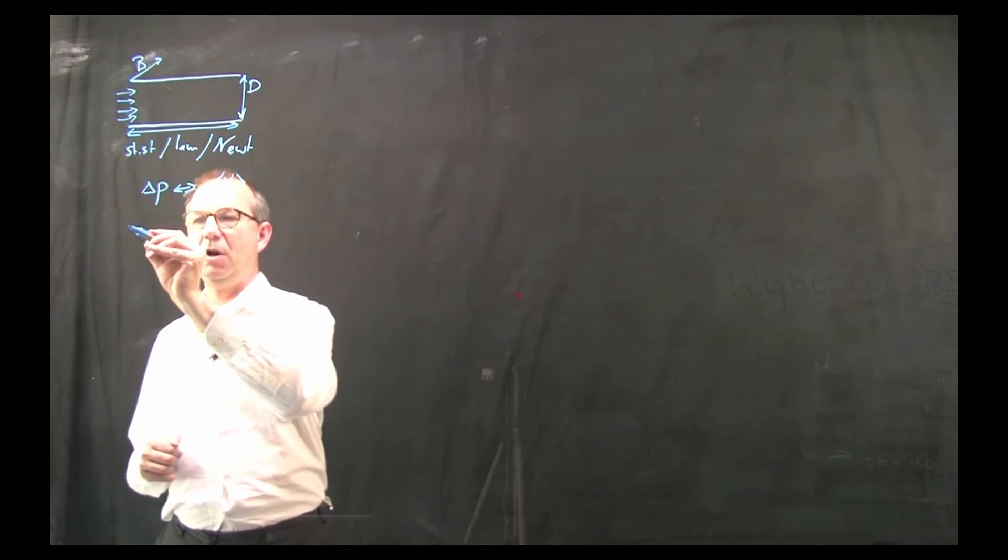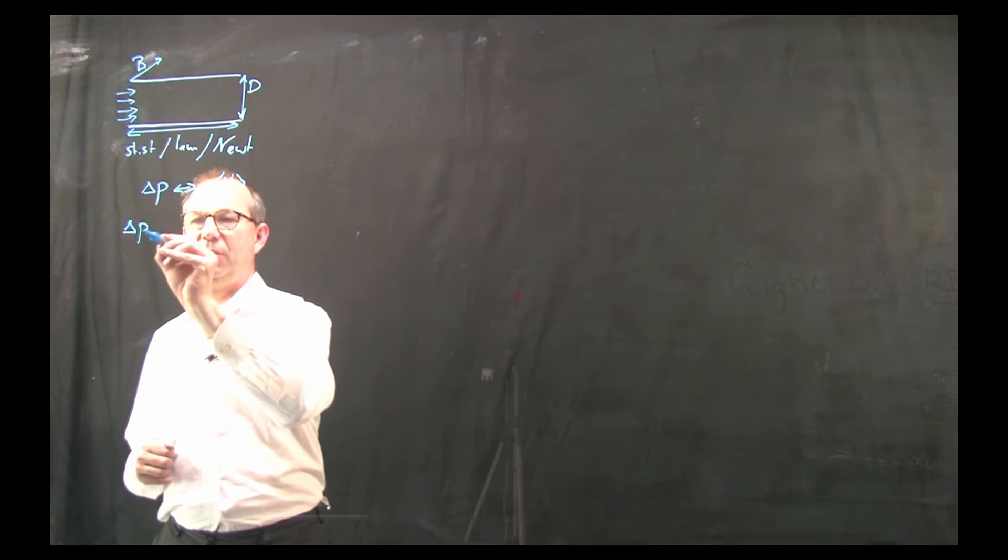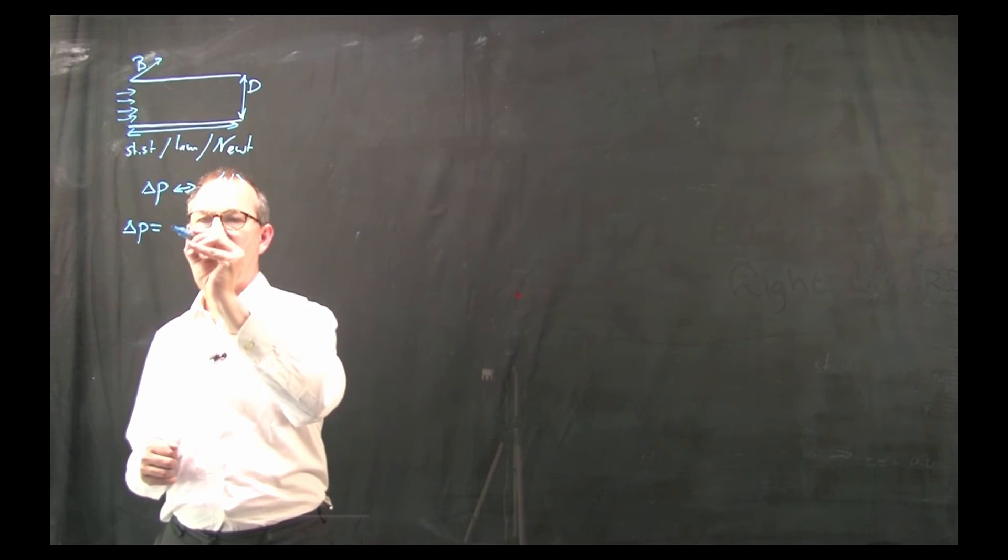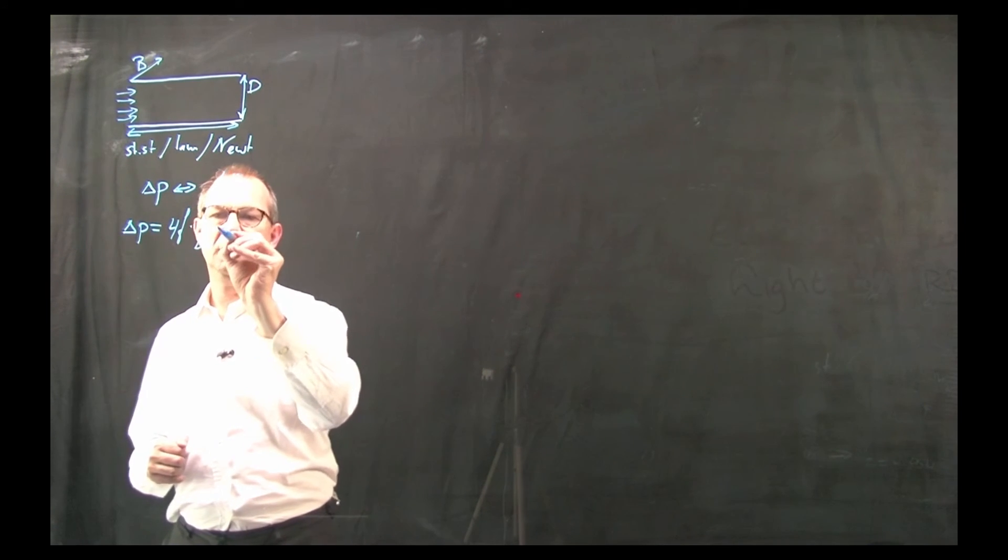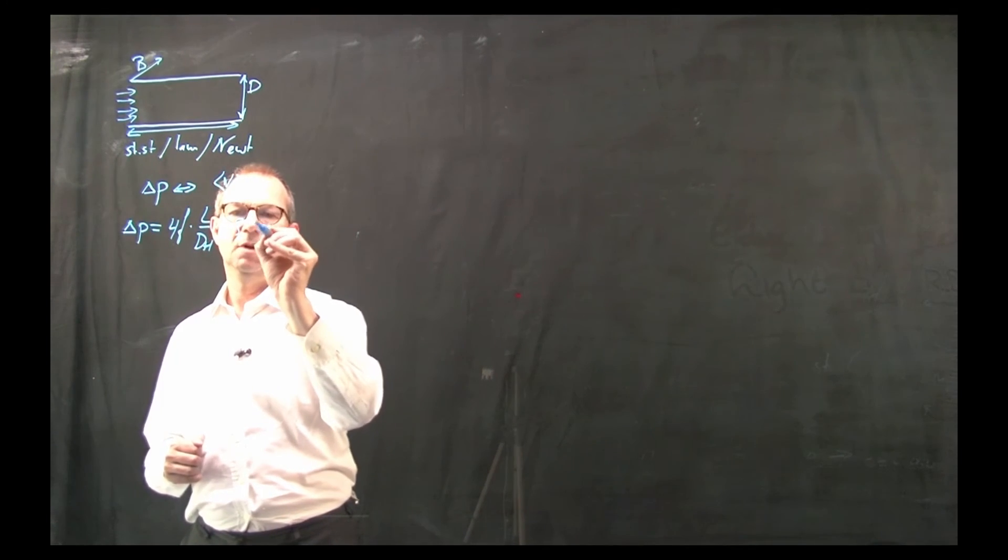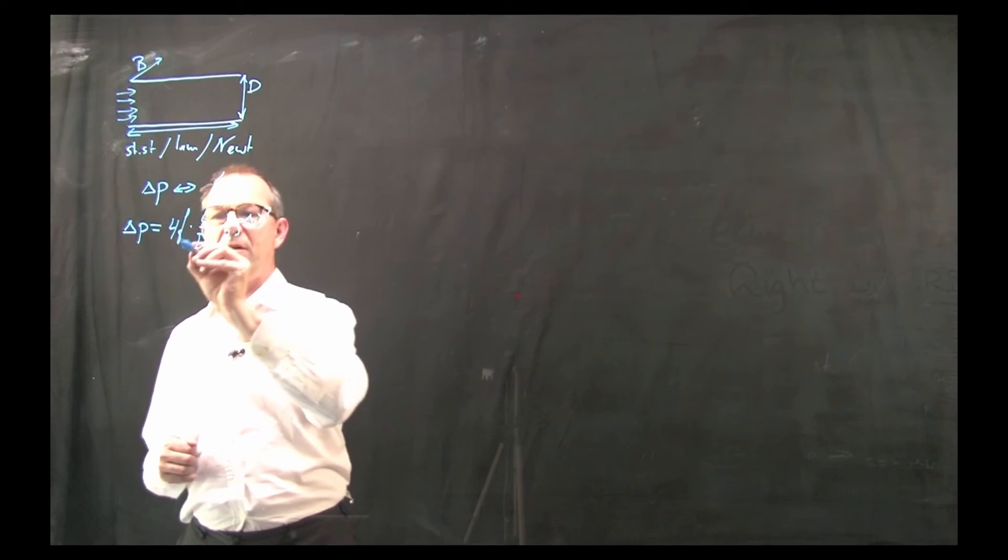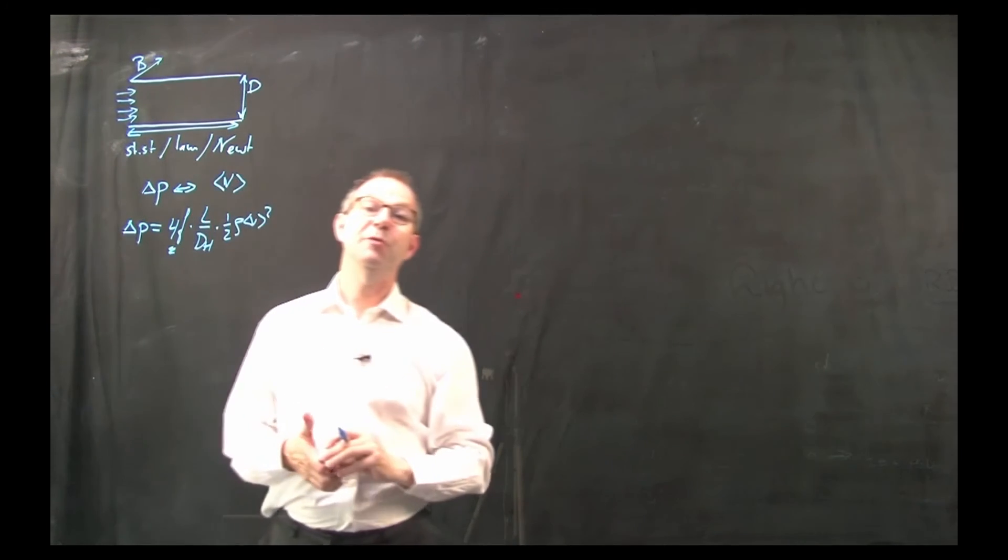Or rephrased, if I cast this in the standard form that we have, delta p equals 4f L over d hydraulic half rho v average squared. What is the fanning friction factor in this case?